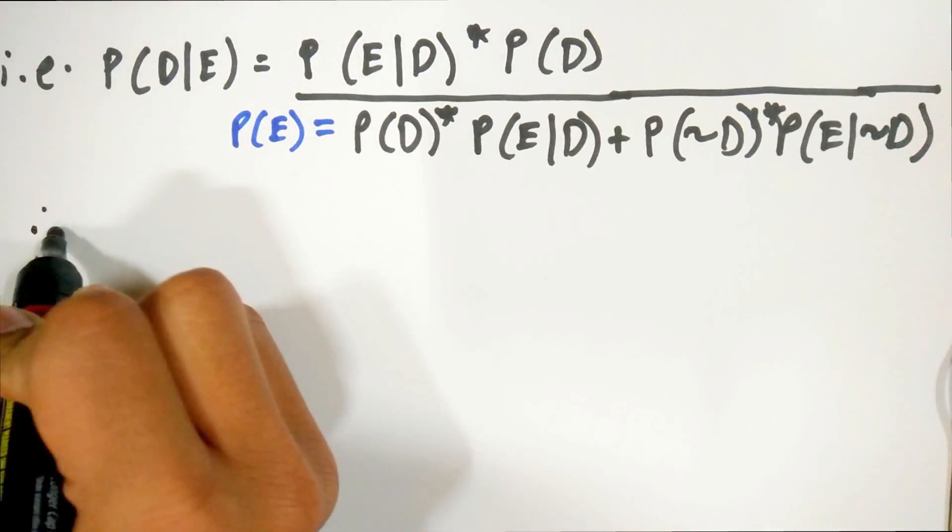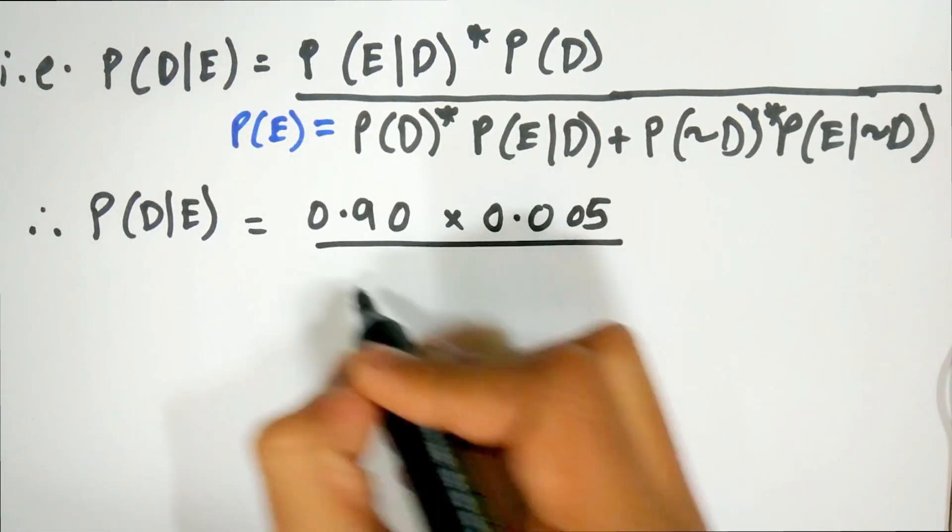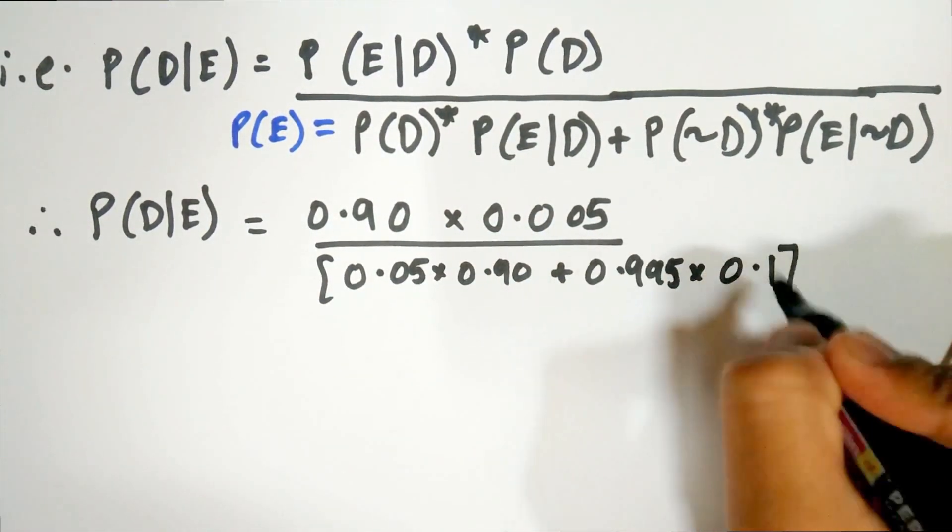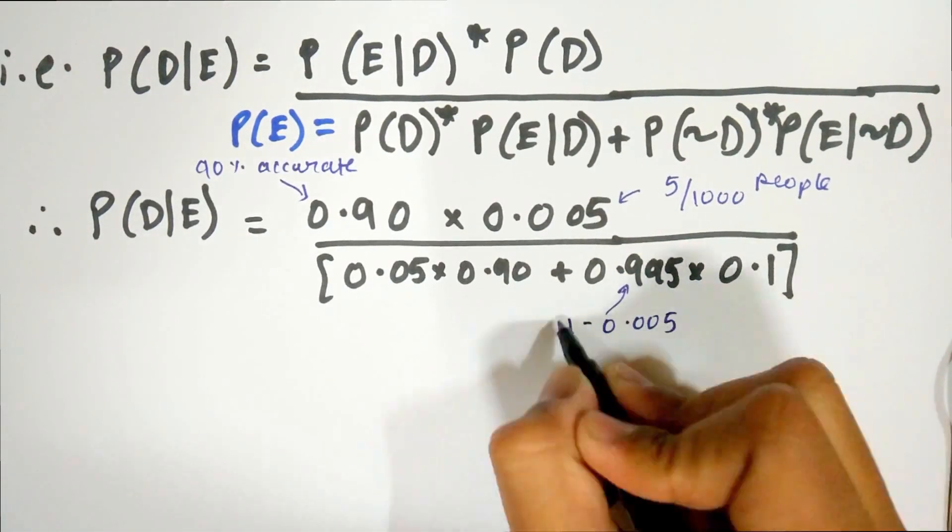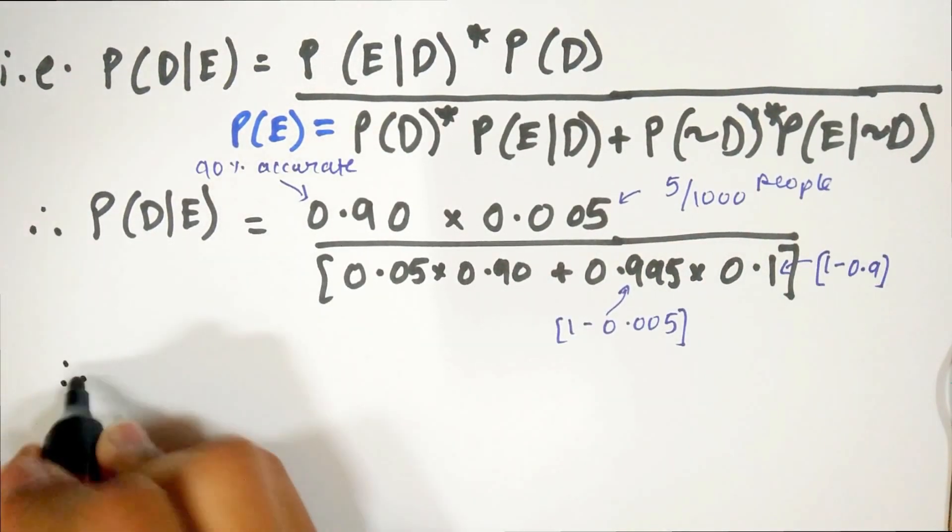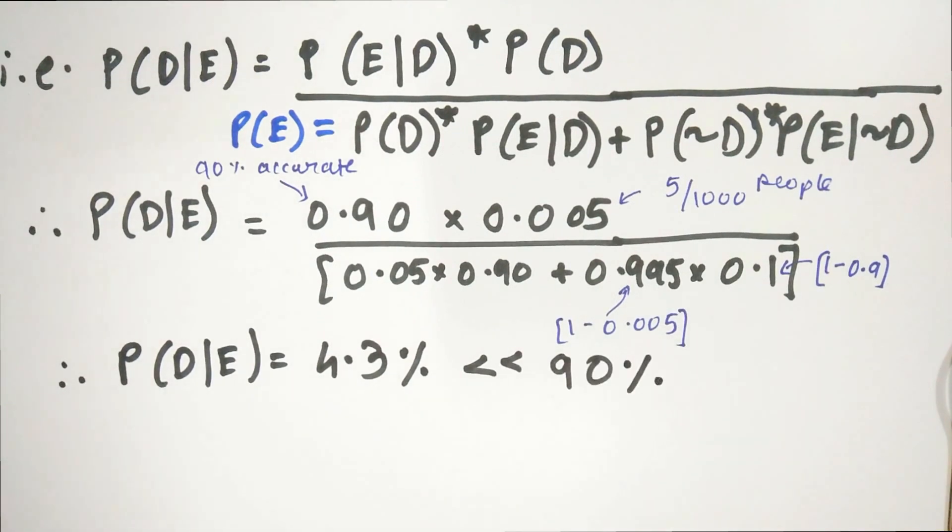Plugging in all the numbers, we get the probability of you having the disease given that you tested positive as 4.3%. Yes, a lot less than what you intuitively thought would be a 90% chance of you having the disease.